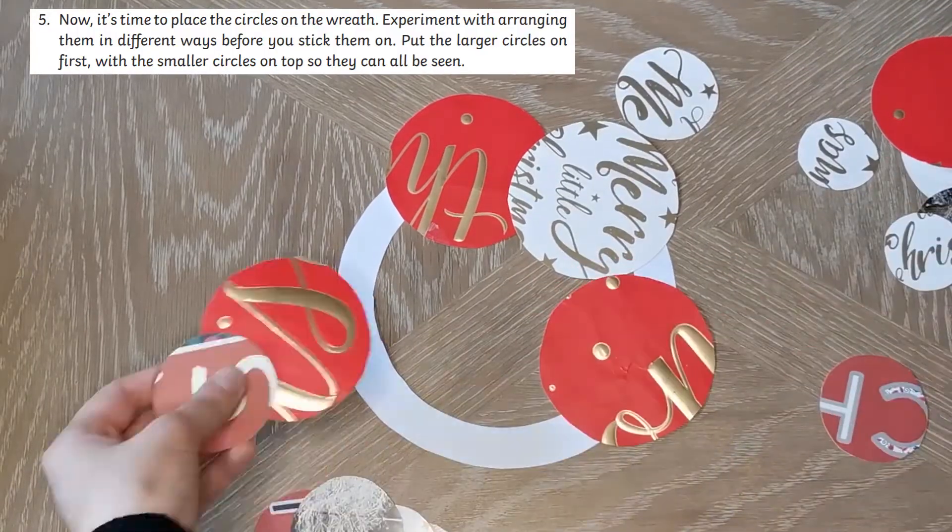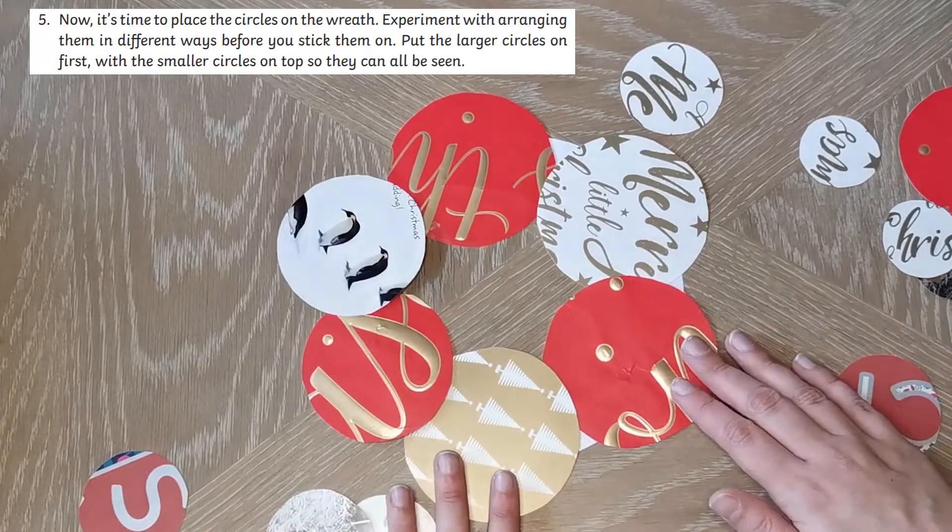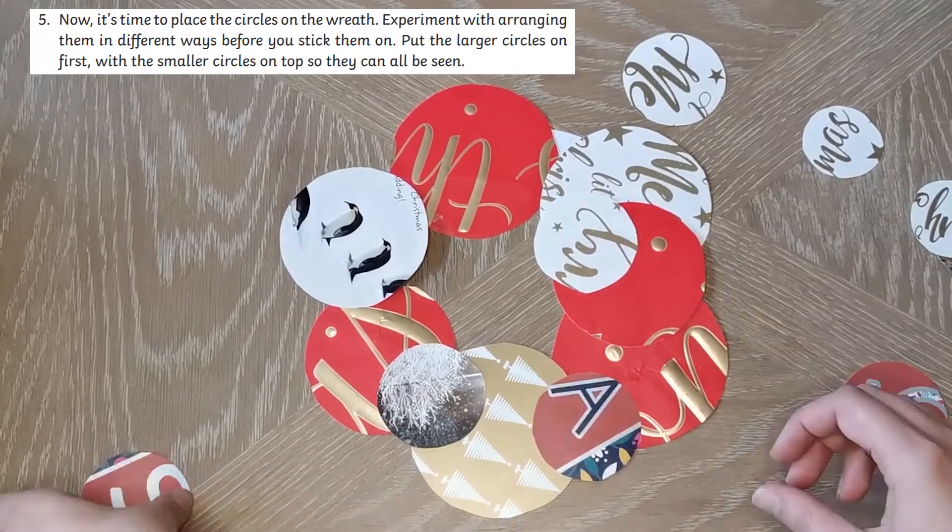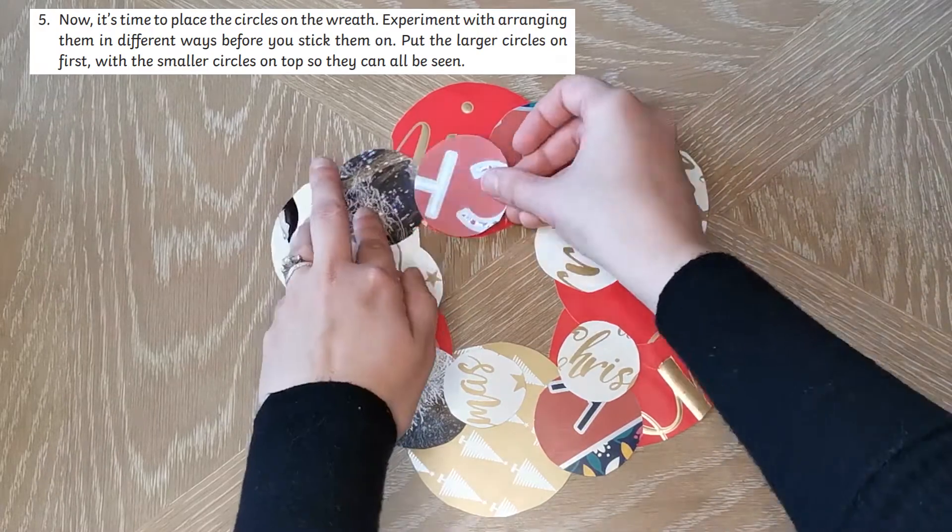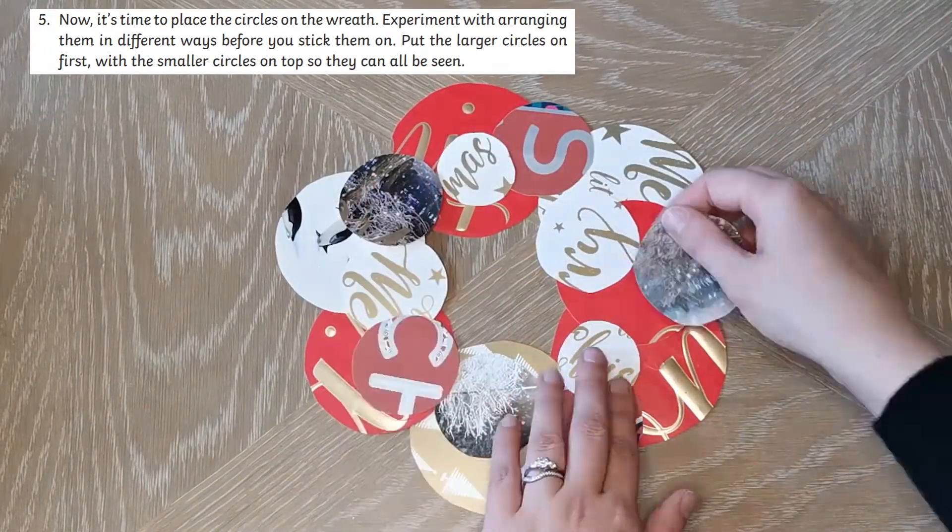Now it's time to place the circles on the wreath. Experiment with arranging them in different ways before you stick them on. Put the larger circles on first with the smaller circles on top so they can all be seen.